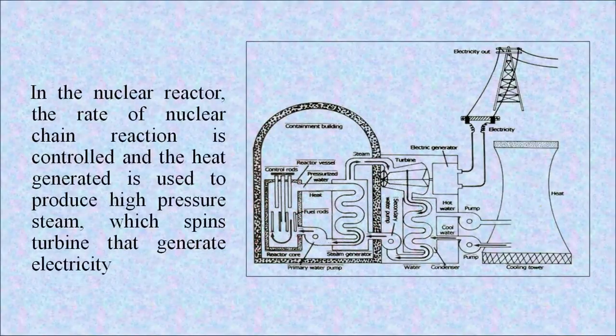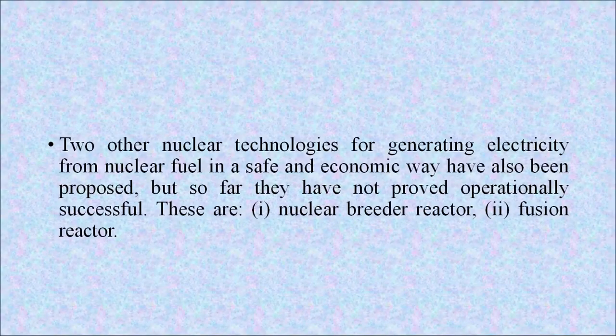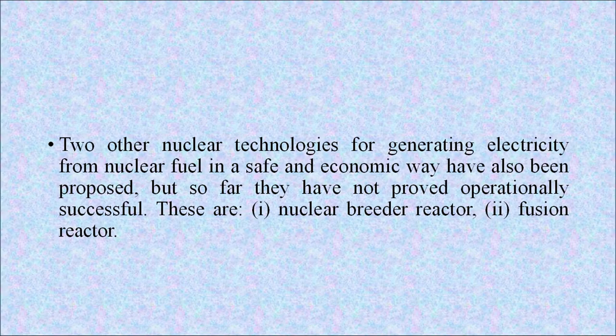In a nuclear reactor, the rate of the nuclear chain reaction is controlled and the heat generated is used to produce high-pressure steam, which spins turbines to generate electricity. Two other nuclear technologies for generating electricity — nuclear breeder reactors and fusion reactors — have been proposed but have not yet proved operationally successful.